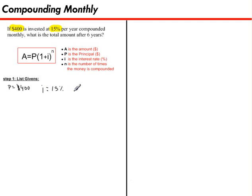Finally, I'll need to find N, the number of times the money is compounded. Since we're talking about money being compounded monthly, that means it's compounded 12 times in a year, because there's 12 months in a year. And we're dealing with 6 years.